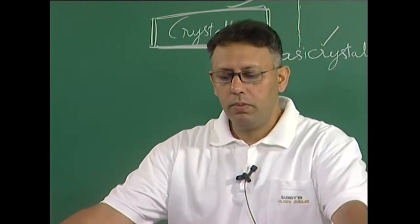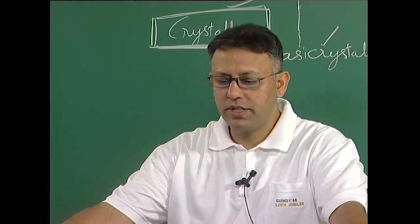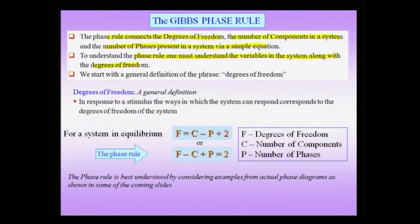Next, we come to an important point known as the Gibbs phase rule in the context of phase diagrams. The phase rule, also called the Gibbs phase rule, connects degrees of freedom, the number of components in a system, and the number of phases present in a system via a simple equation. To understand the phase rule, one must understand the variables in the system along with the degrees of freedom. The degrees of freedom is a technical term, and we will try to understand what it implies in the context of a phase diagram.